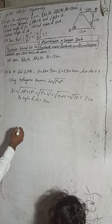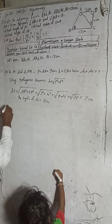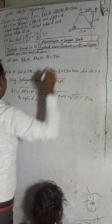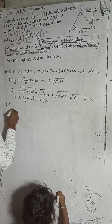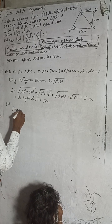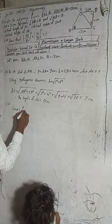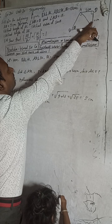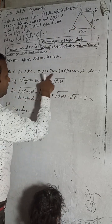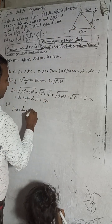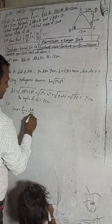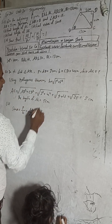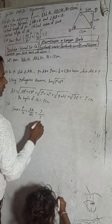Now number two: find the value of sin alpha. Sin alpha equals P by H. In this triangle, with alpha as reference, perpendicular is AD and hypotenuse is AC. AD is given as 3 cm and AC we found as 5 cm, so sin alpha equals 3 by 5.